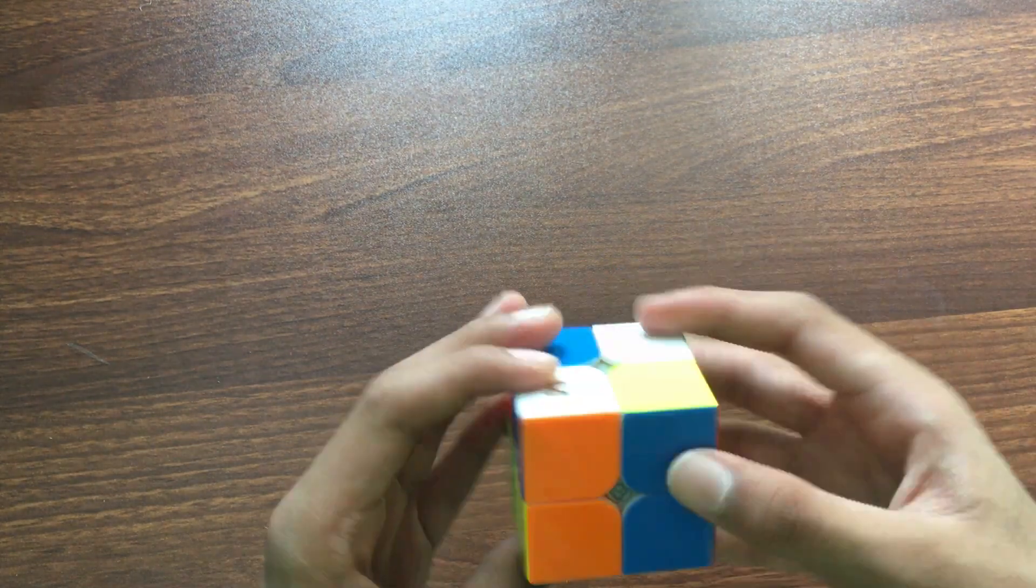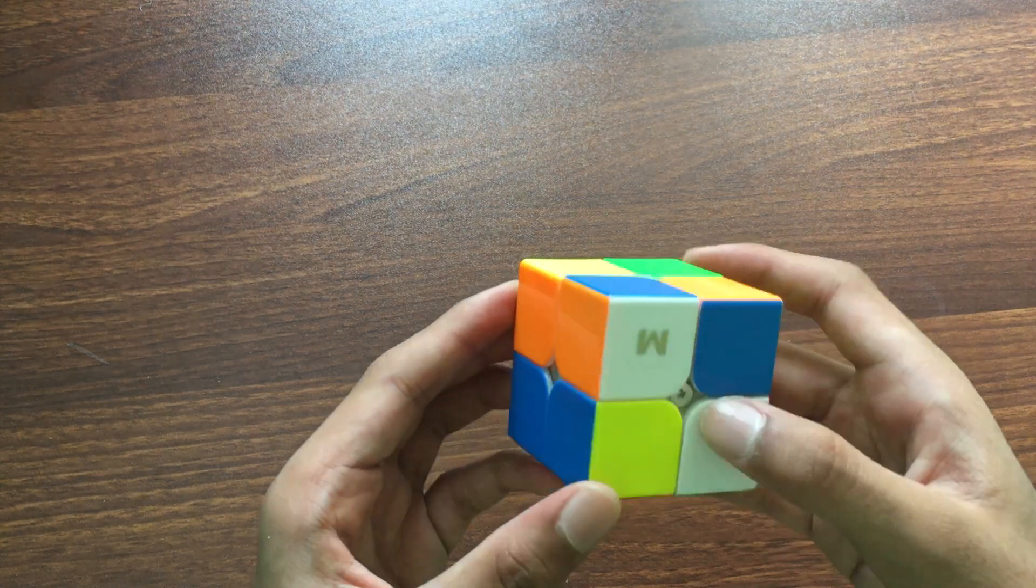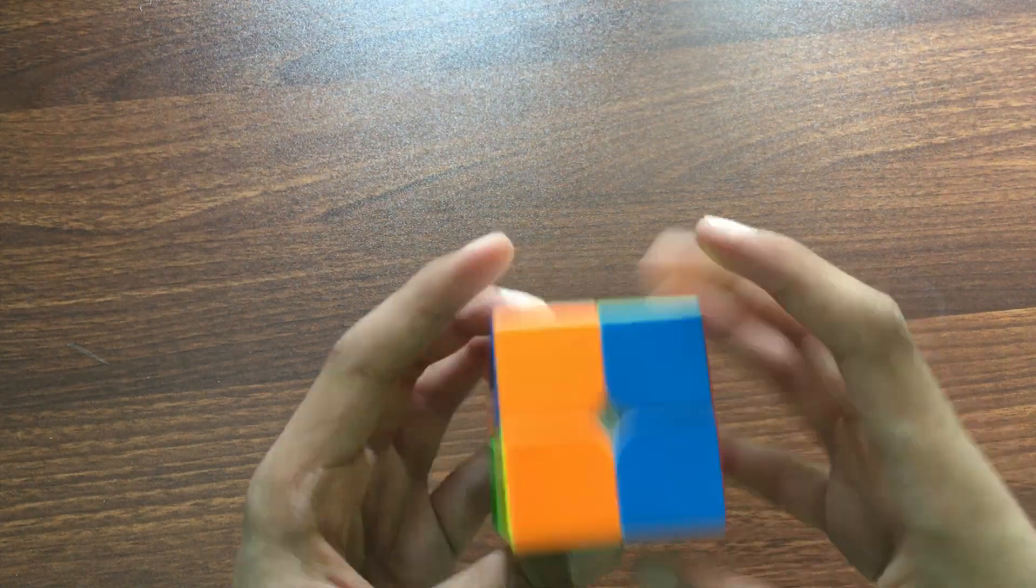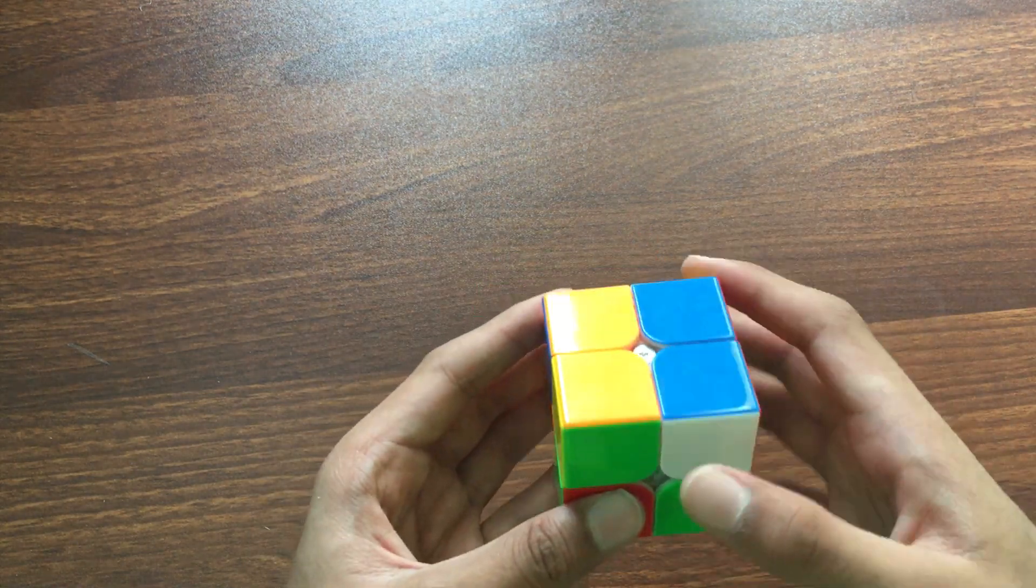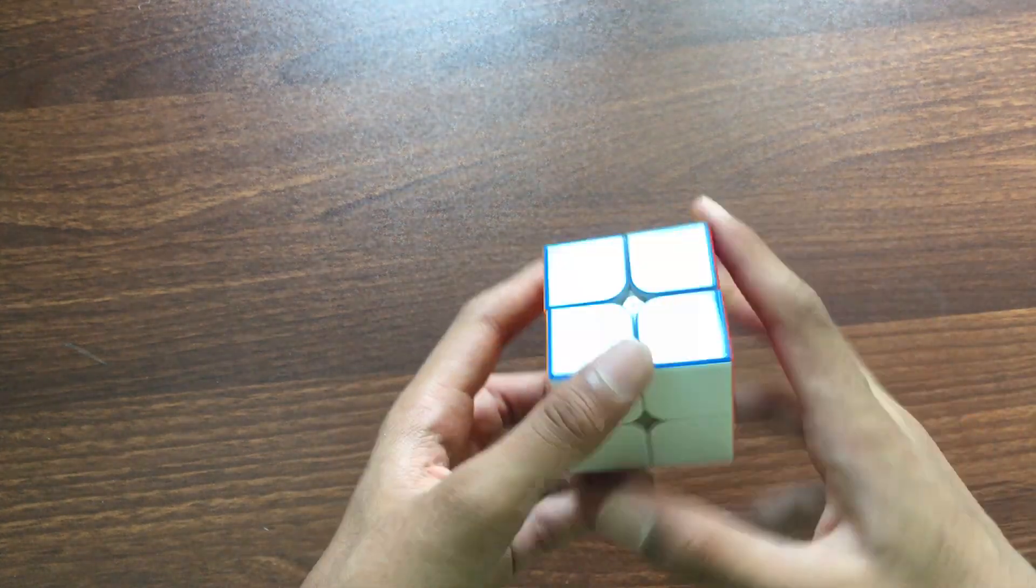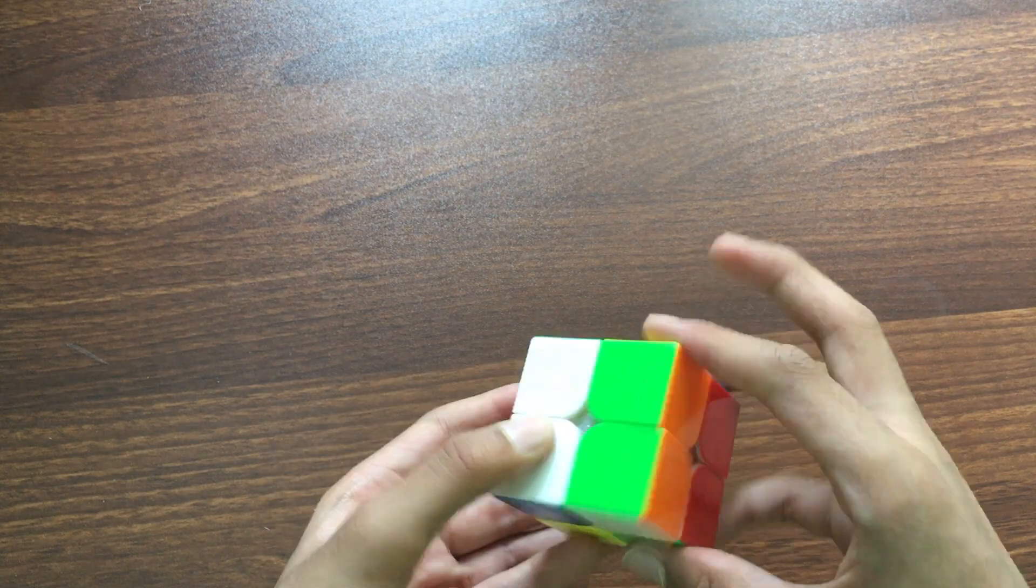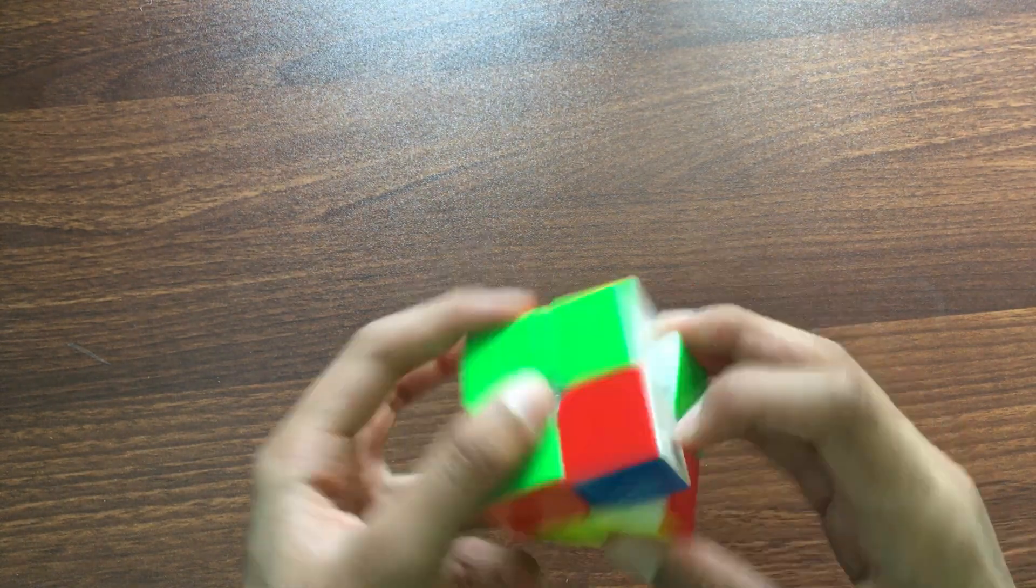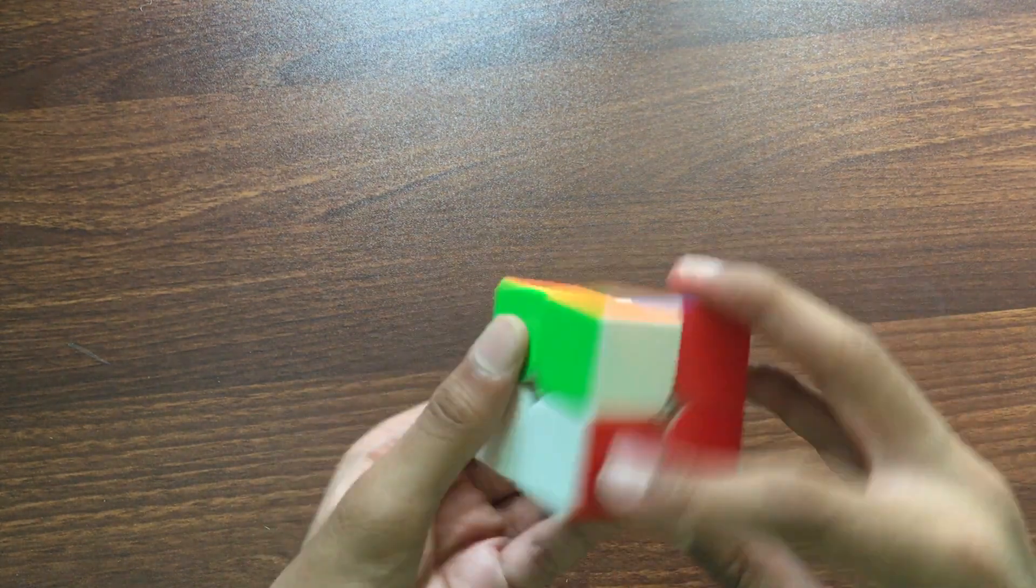Okay, the scramble is not that great, but let's just do it. Yeah, that was easy. I can really say, I can already tell that this is my new main. The next cube now, this one, this is the X-Man Bell v2 Pyramix.